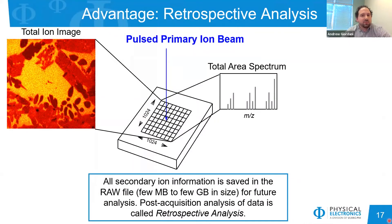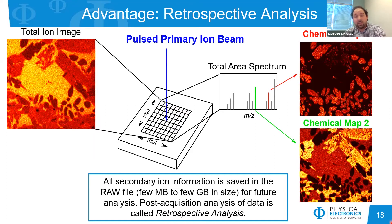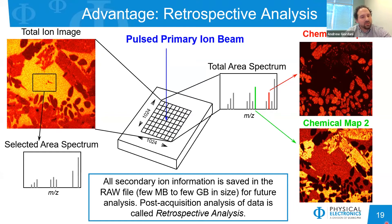Retrospective analysis is another advantage of TOF-SIMS depth profiling. As the primary ion beam pulses over the sample, a mass spectrum is generated at every XY pixel and stored into the computer. You can look at the full mass spectrum integrated over the whole area and generate chemical maps of any mass-to-charge ratio. You can work from the total ion image to look at specific regions of interest and generate mass spectra from those areas. Since all information is stored at each depth, you can reconstruct and examine images and spectra at different depths throughout the sample.